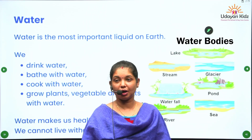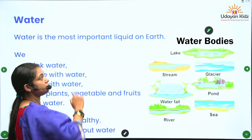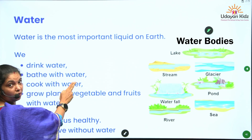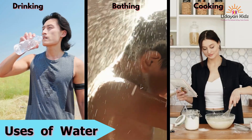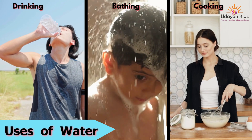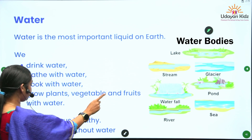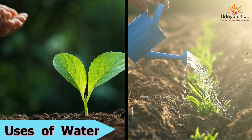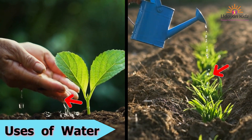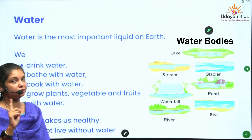First we will learn about what is the importance of water. Water is the most important liquid on the earth. We drink water, we bathe with water, we cook with water. We grow plants, vegetables and fruits with water. Water makes us healthy. We cannot live without water.